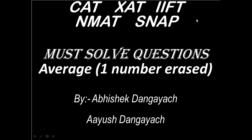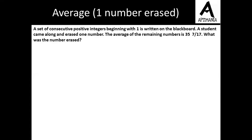Hello, I am Abhishek and in this video we are going to discuss a question based on average. The question is: a set of consecutive positive integers beginning with 1 is written on the blackboard. A student came along and erased one number. The average of the remaining numbers is 35 and 7 by 17. What was the number erased?